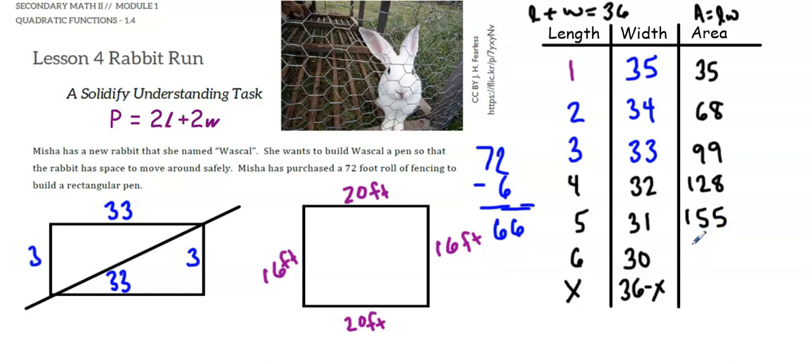Since for these areas, I'm just multiplying length times width, I'll do the same here with my linear expressions. So that would be x times 36 minus x. So far, my work makes sense to me because my area is the product of two linear factors.